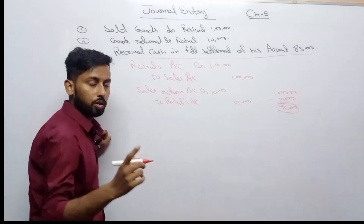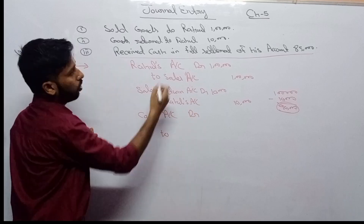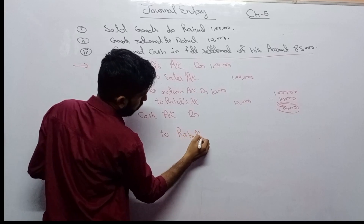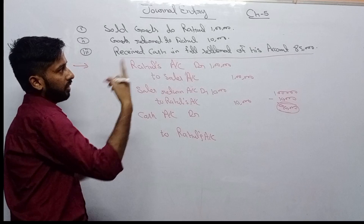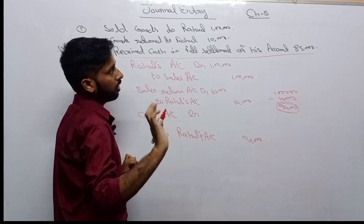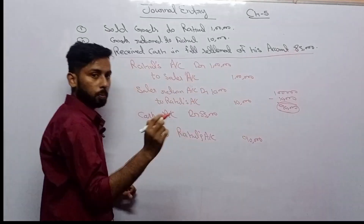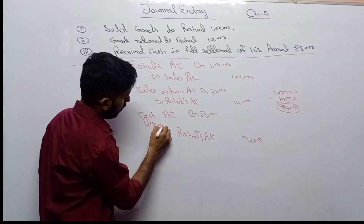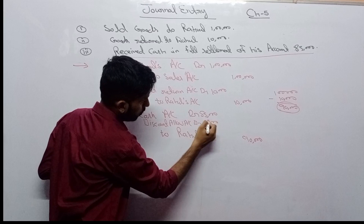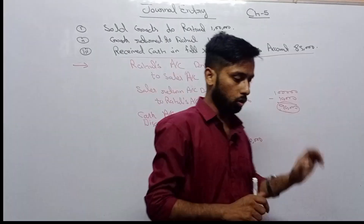For entry three: cash is received, so Cash account debit. Rahul is giving less, so Discount Allowed account debit. To Rahul's account credit. Cash received: 85,000. Discount allowed: 5,000. Total: 90,000 to Rahul's account.